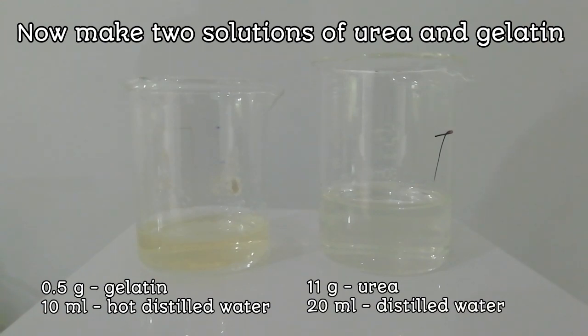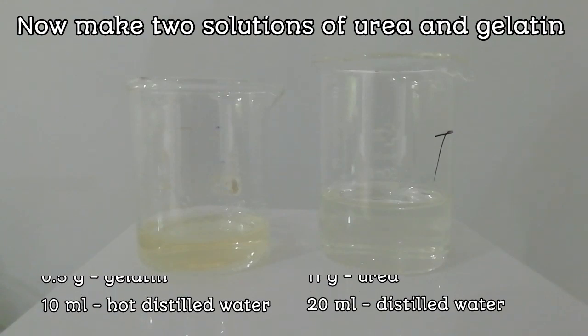Now, 11 grams of urea is dissolved in 20 ml of distilled water.